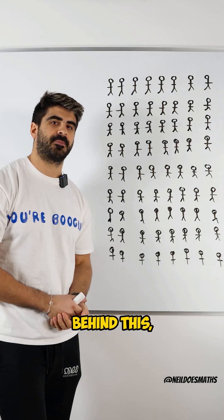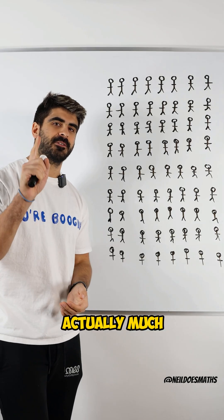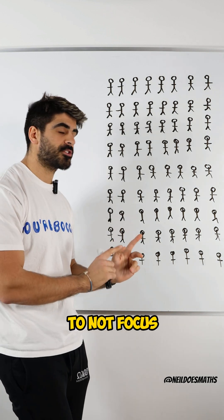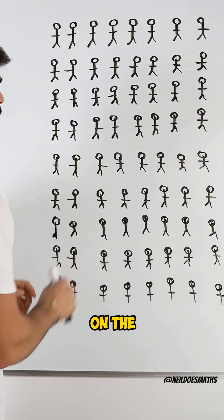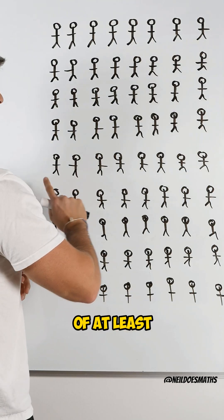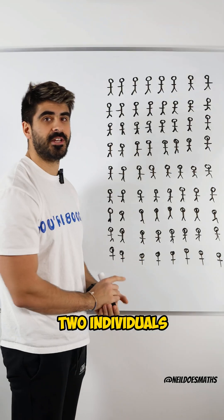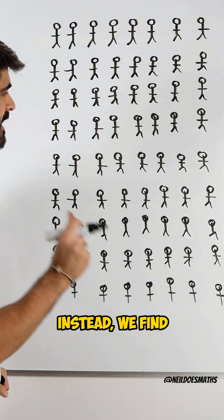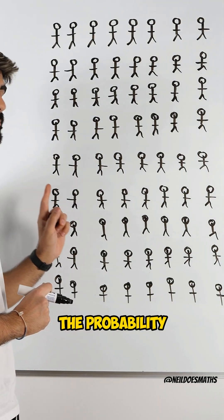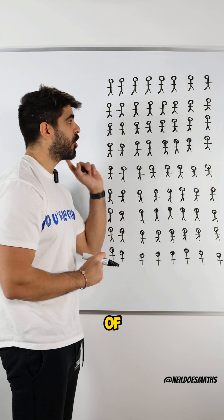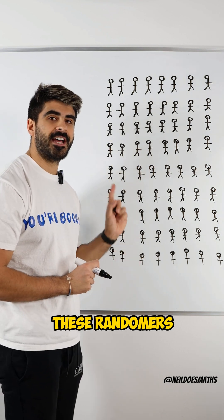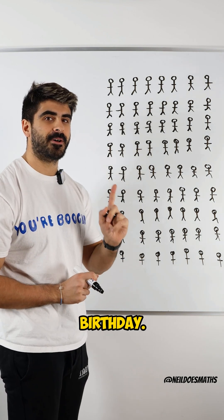To figure out the maths behind this, it's actually much easier to not focus on the probability of at least two individuals having the same birthday. Instead, we find the probability of none of these individuals having the same birthday.